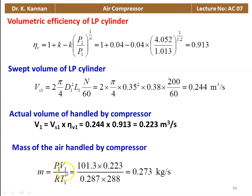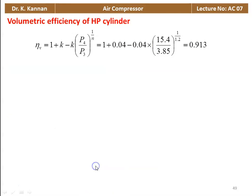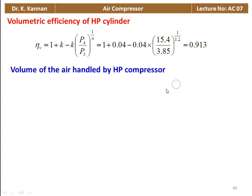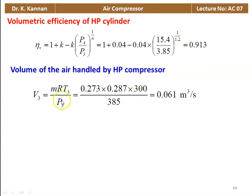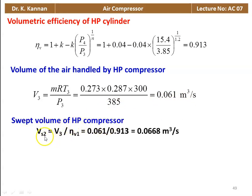Mass of air handled: M = P1V1 / RT1 = (101.3 × 0.223) / (0.287 × 288) = 0.273 kg/s. Volumetric efficiency of the HP cylinder: η_V = 1 + K − K × (P4/P3)^(1/n) = 1 + 0.04 − 0.04 × (15.4/3.85)^(1/1.2) = 0.913. Volume of air handled by HP compressor: V3 = MRT3/P3 = (0.273 × 0.287 × 300) / 385 = 0.061 m³/s.